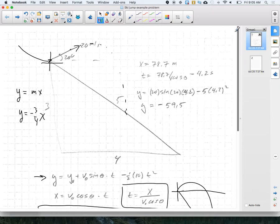If 78.7 is my x position, that gives me a time of 4.2 seconds. Plugging that 4.2 into my y equation, I end up with 59.5 meters. I can confirm that this fits the equation y equals minus three-fourths x. Plug those in, and it works.